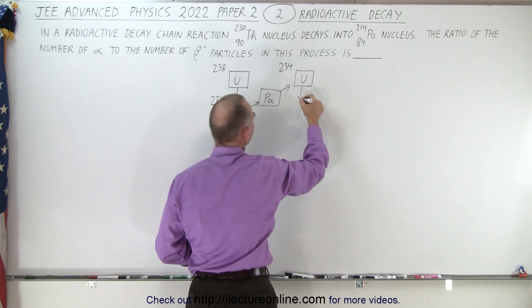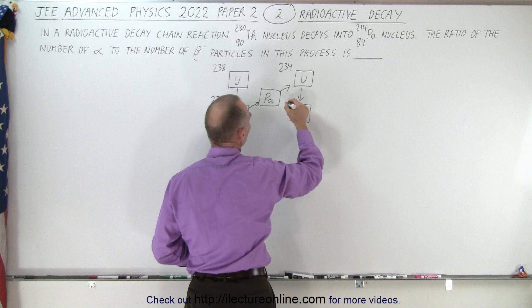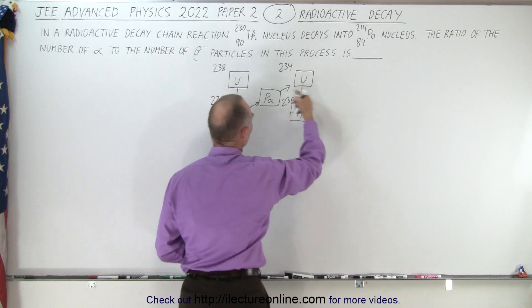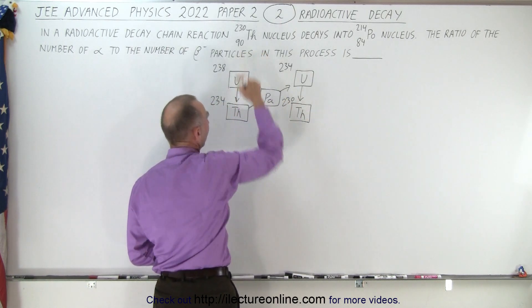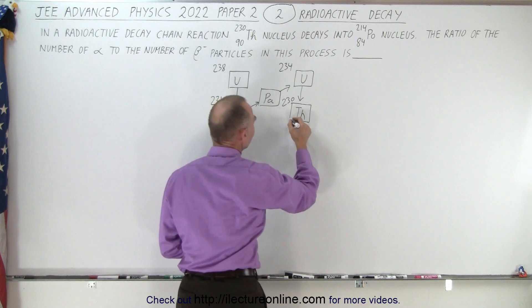And then you have an alpha decay to thorium again, and this thorium will now be 230, and that's the one we want to start with, because that's the starting position. Then we go from here to radium.